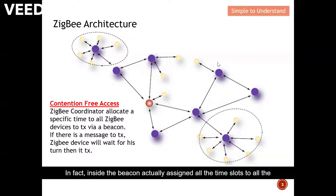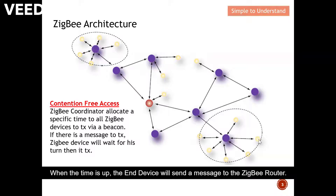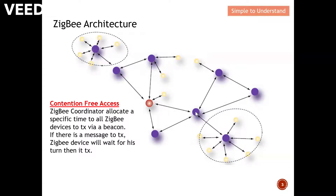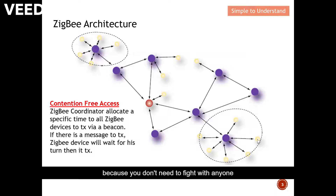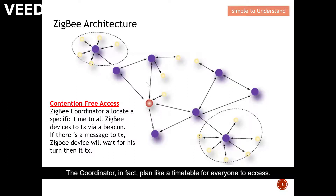Inside the beacon, all time slots are assigned to all ZigBee devices in the ZigBee architecture. When the end device opens the beacon, it knows which time is allocated for it to use. When the time is up, the end device sends the message to the ZigBee router, and the router likewise knows its time slot to transmit, sending the message on to the next router and finally back to the coordinator. This is why it is called contention-free — you don't need to fight with anyone to send a message; the coordinator creates a timetable for everyone.